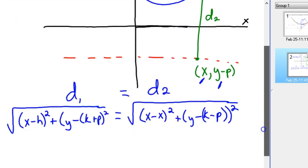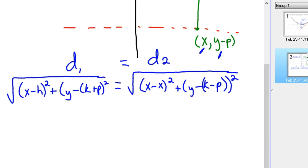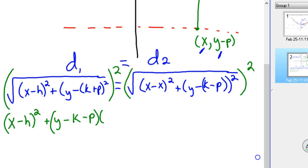Now it's a matter of simplifying this and solving it to derive the general form of the equation. First off, we're going to square both sides of the equation to get rid of the radicals. So we have X minus H squared, plus, and I'm going to write this out twice, distributing the minus through. Since it's squared, it's going to be Y minus K minus P, and Y minus K minus P equals, well, X minus X is 0, so you're just left with Y minus K plus P, distributing the negative through, and it's squared, so you're going to do it again, Y minus K plus P.